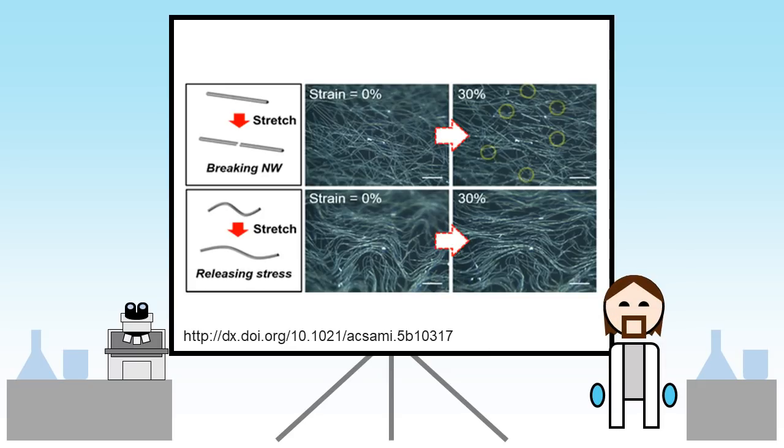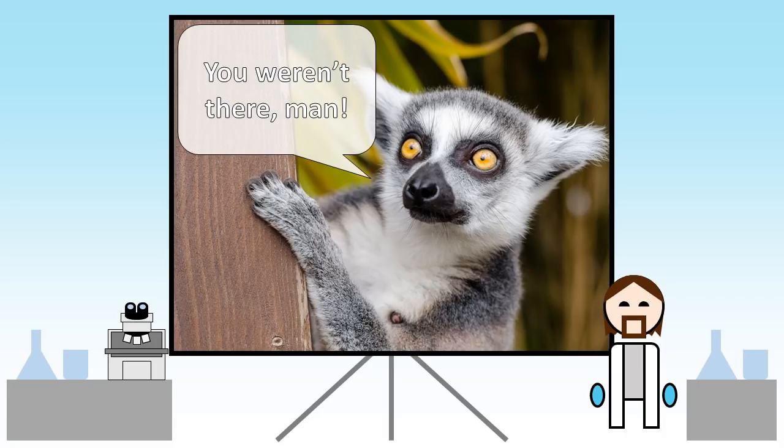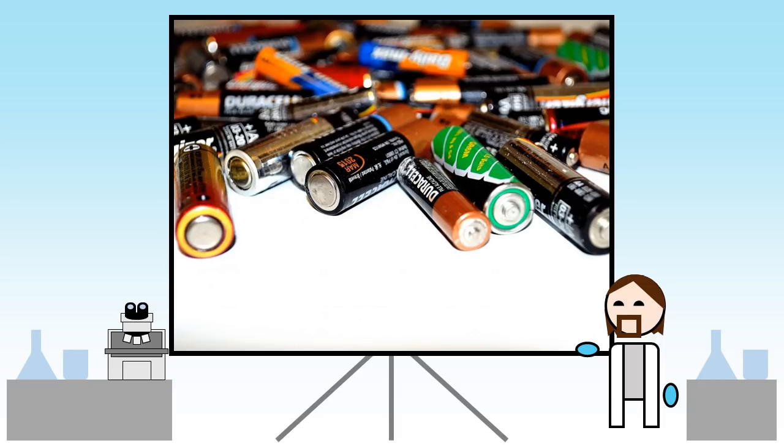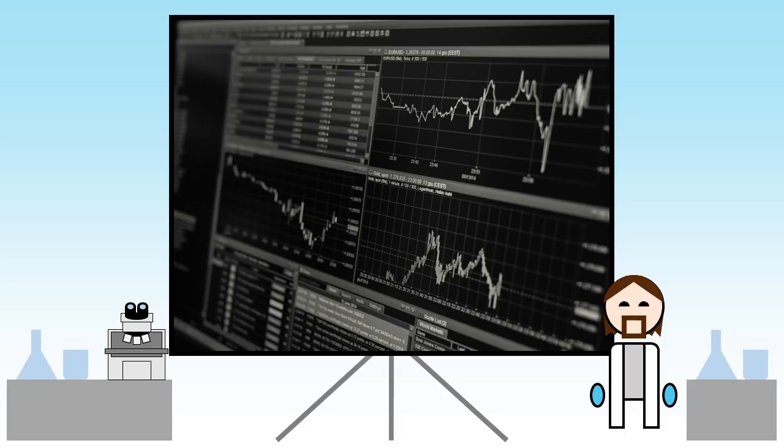This causes the nanowires to become wavy, and so when the film is stretched they simply straighten out instead of slipping apart or breaking. A really simple idea but still incredibly clever. Given all we've seen today, I hope you'll agree that silver nanowires have lots of potential.